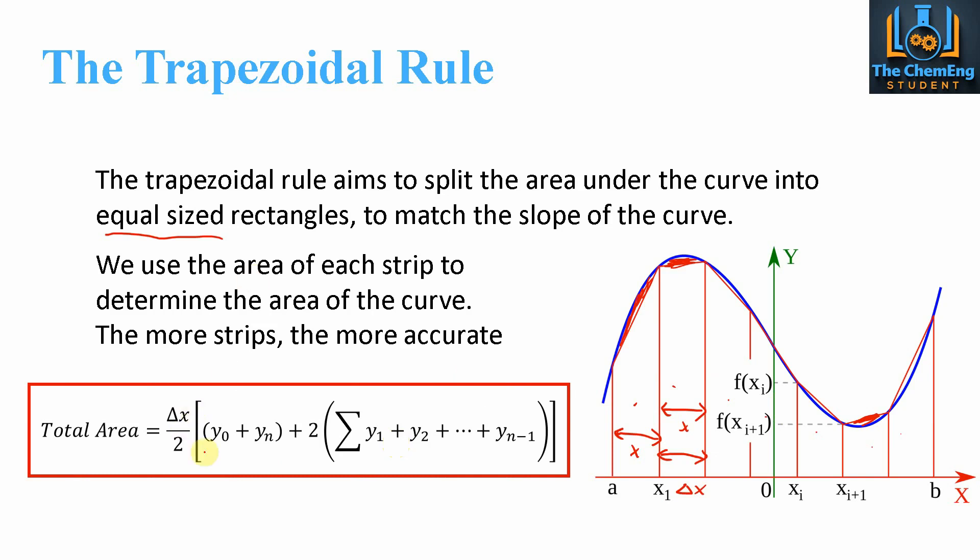Now these terms, so the y0 and the yn, these are the initial and the final values of y for our given system. So that would be at this point here is the initial, and this point here is the end. That is if we're going in that direction. Now here, this part is we add up all the internal points, so that would be from here, here, here, and so forth. We add all them up, and we multiply it by 2. Then we collect all of this, and we multiply by delta x divided by 2. And that will give us the total area between this curve.